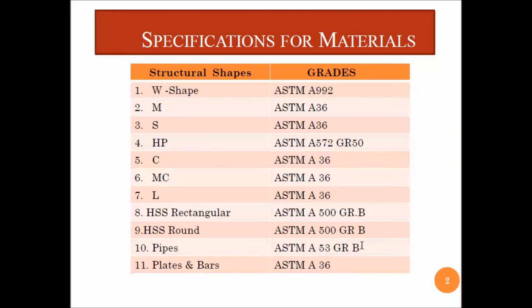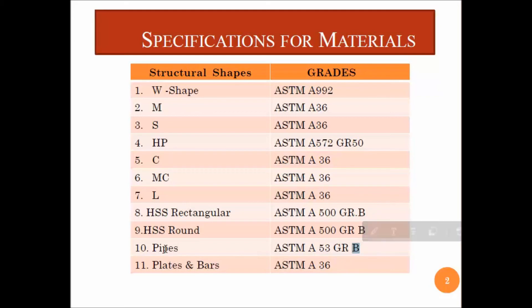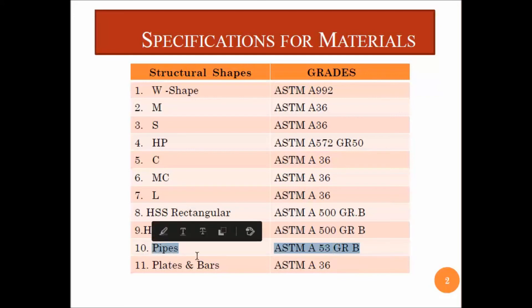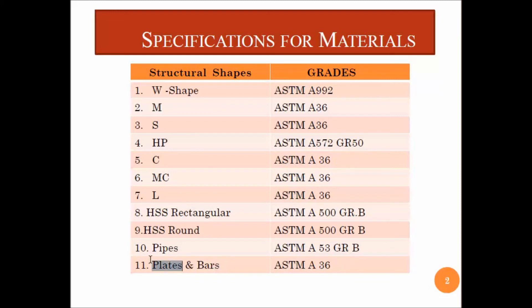Pipes are mostly used in handrails, guardrails, and stairs. We definitely see this kind of pipes in handrails, guardrails, and stairs. Plates are mostly used in connections like shim plates, built-up members, and bent plates.